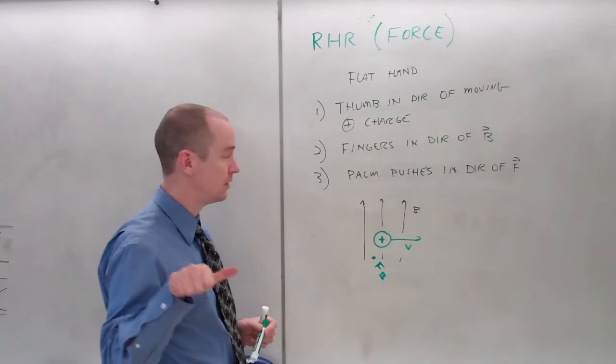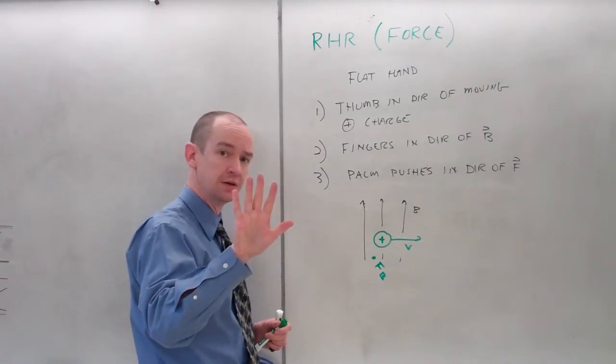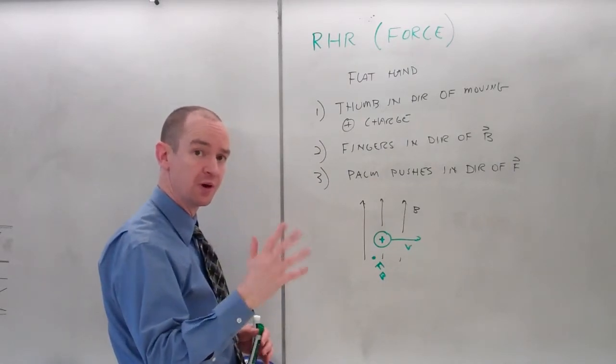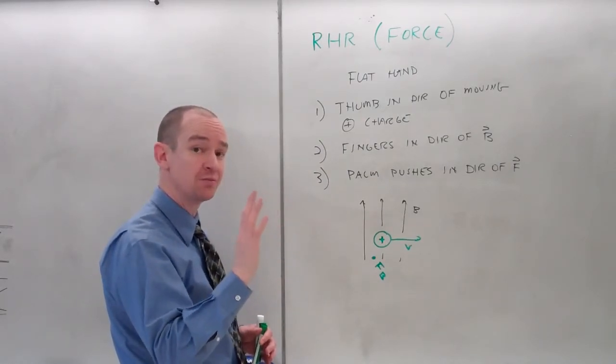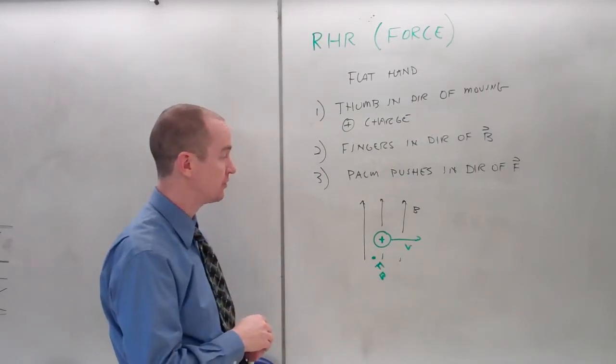Once again, V. Fingers point in B. Palm pushes. Notice that you might have to contort your hand quite a bit. If you find your hand doesn't bend that way, you need to reorient your wrist in order to make the proper connections.